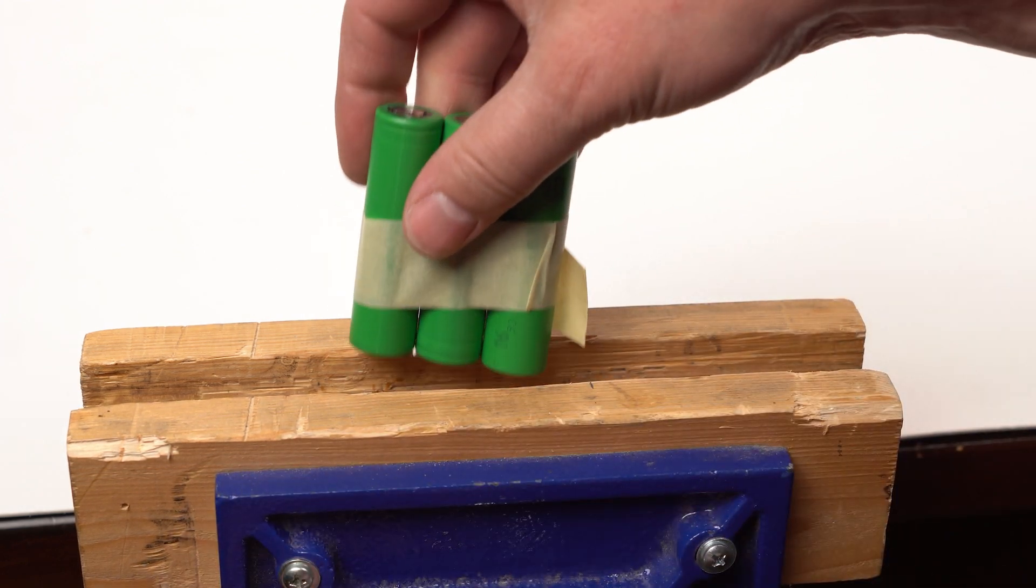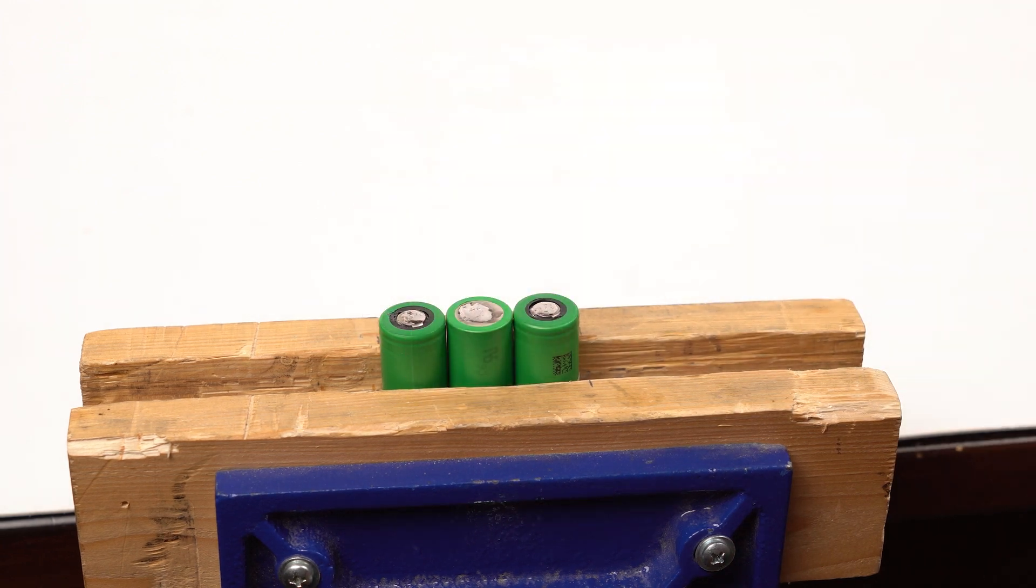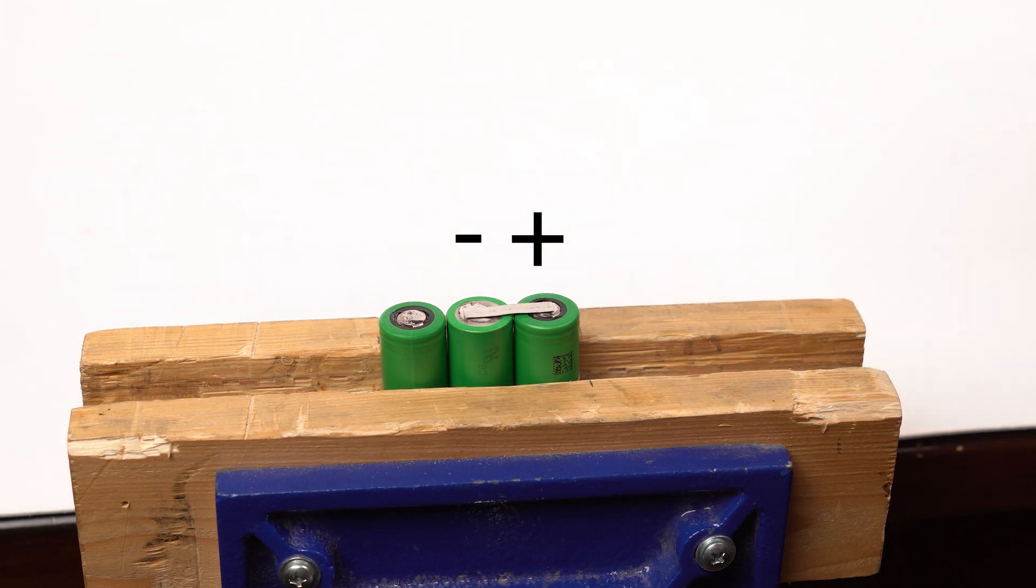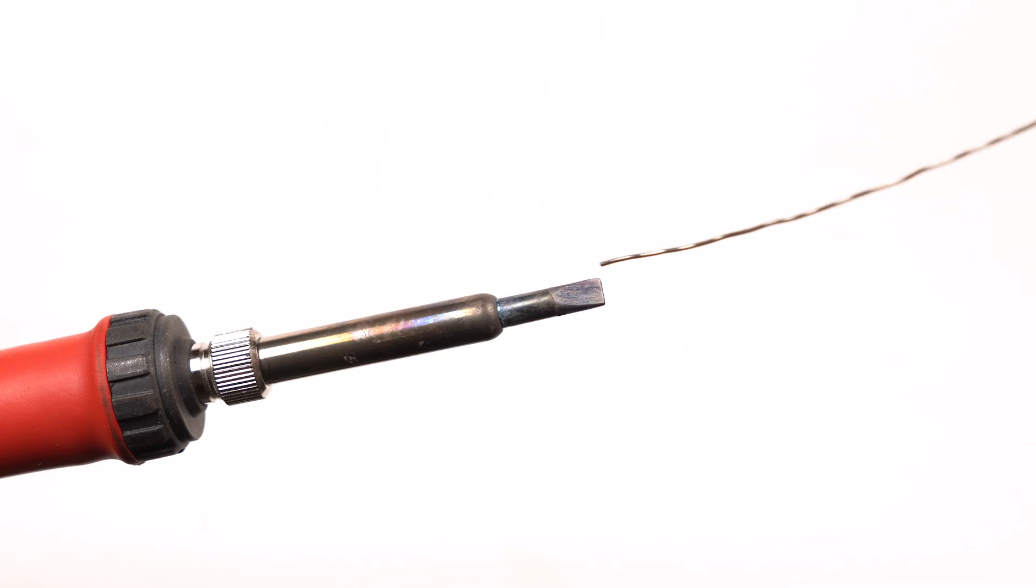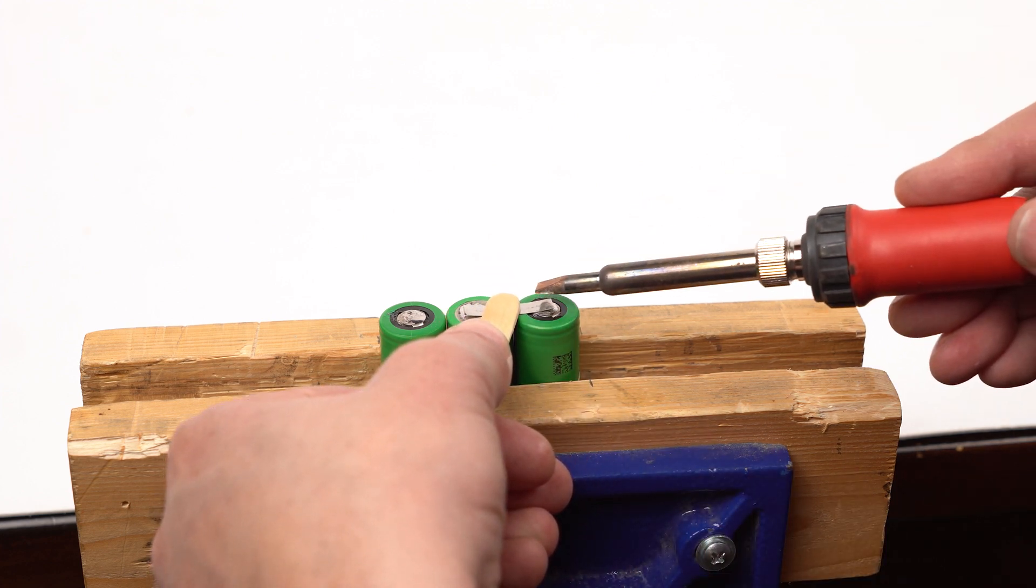Flip the cells over. Be careful to place the tabbing in the correct location. Remember, we want a battery in series. Again, thoroughly tin your soldering iron. Solder the tabbing to the cells using the method I previously showed you.